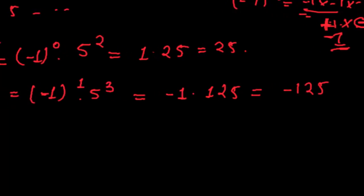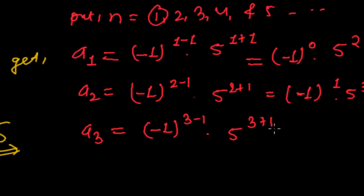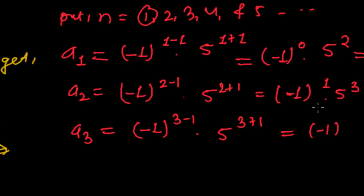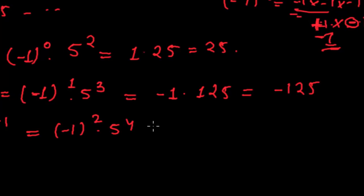a_3: since n = 3, that is (-1)^(3-1) times 5^(3+1) = (-1)^2 times 5^4. Since (-1) to an even power is positive, (-1)^2 = 1. And 5^4 = 625. So a_3 = 625.